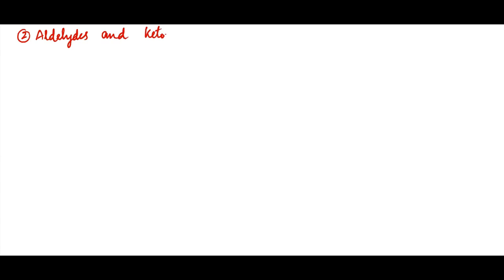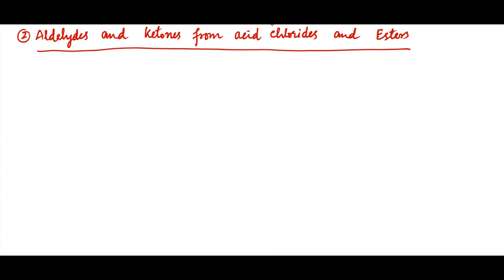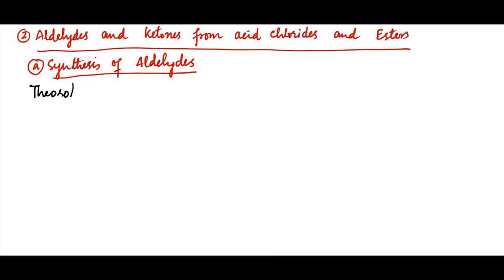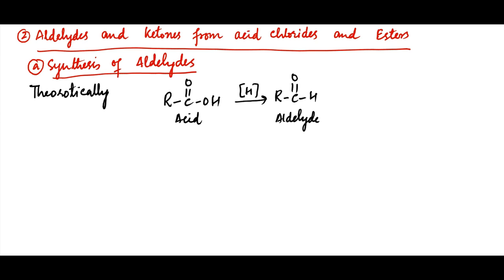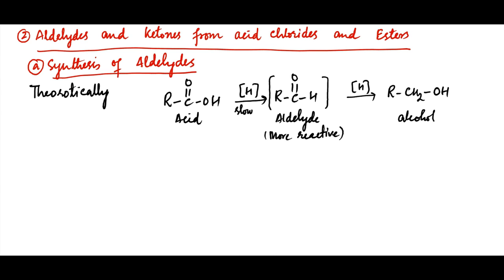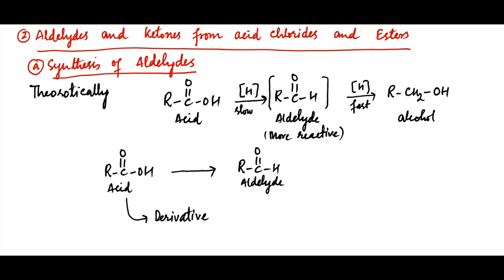The second synthetic method is synthesis of aldehydes and ketones from acid chlorides and esters. Aldehydes on oxidation give carboxylic acids; therefore, theoretically, carboxylic acids on reduction should give aldehydes. However, aldehydes tend to be more reactive than acids, so reducing agents strong enough to reduce acids also reduce aldehydes to primary alcohols even faster. Thus, in order to reduce carboxylic acids into aldehydes, carboxylic acids must first be converted into a functional group that is easier to reduce than aldehyde, so that the aldehyde will not be reduced to primary alcohols.